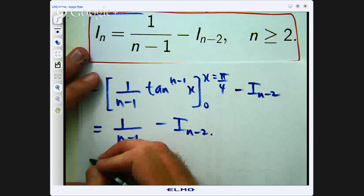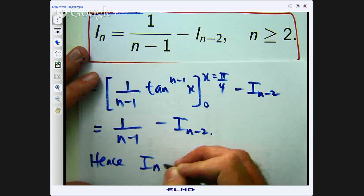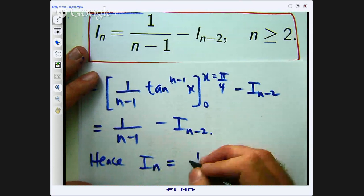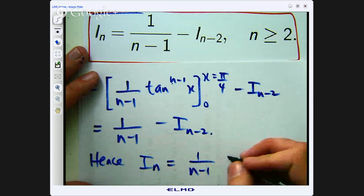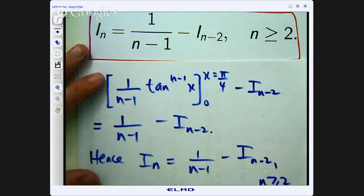So the conclusion is I sub n equals 1 over n minus 1 minus I sub n minus 2, for n greater than or equal to 2.